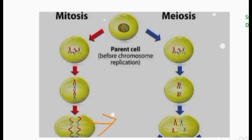In mitosis, sister chromatids are separating, which results in two diploid daughter cells. In meiosis, chromosomes are separating via spindle fibers, and four haploid daughter cells are formed. For example, with four chromosomes in the parent cell, each daughter cell would have two chromosomes — half the number — so they are haploid.